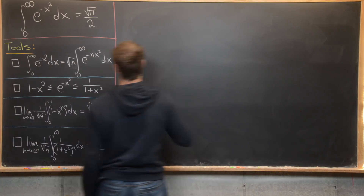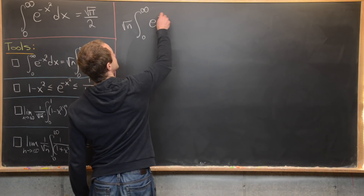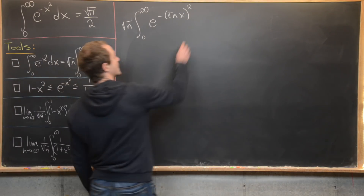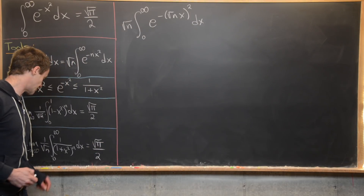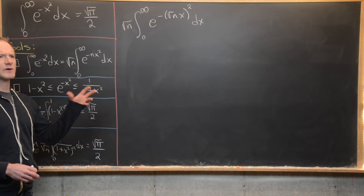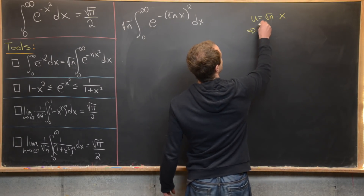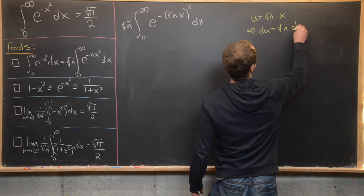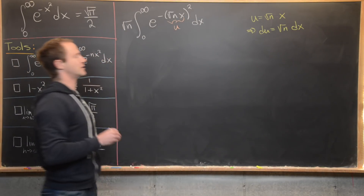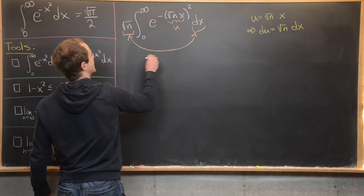Starting with the right hand side: we take the square root of n times the integral from 0 to infinity of e to the minus (square root of n times x) squared, which motivates a substitution where u equals the square root of n times x, making du equal to the square root of n dx. So all of this becomes u and the underlined part becomes our du.